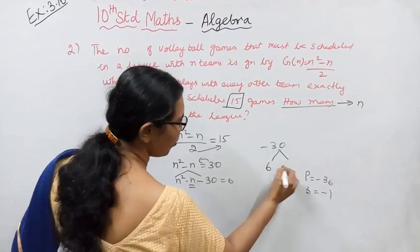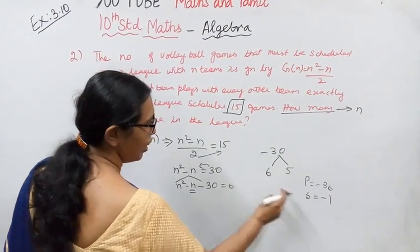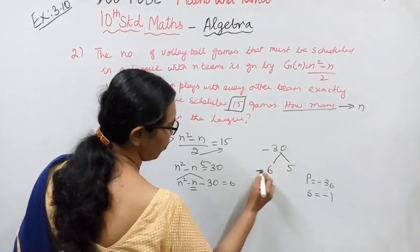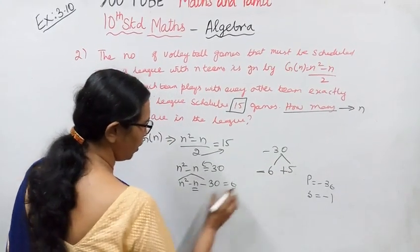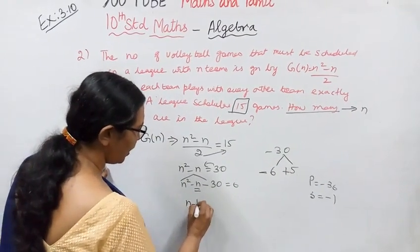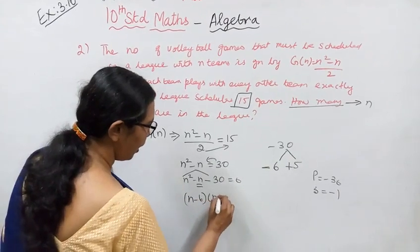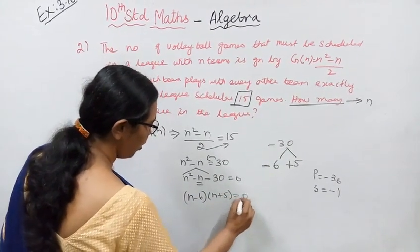So 6 × -5 = -30, and the sum is -1. Therefore the factors are (n - 6)(n + 5) = 0.